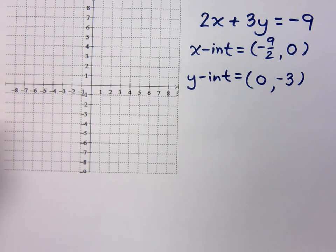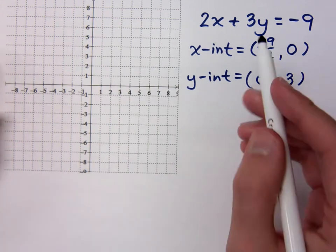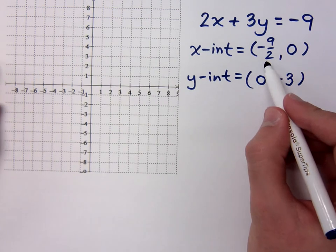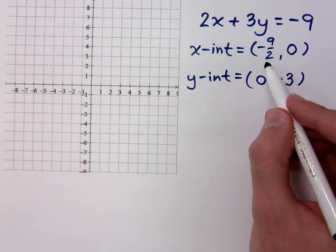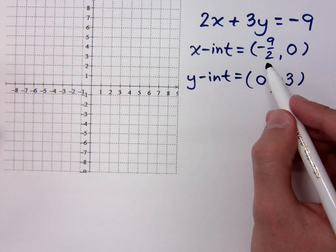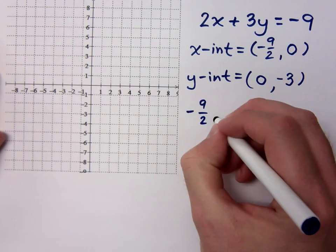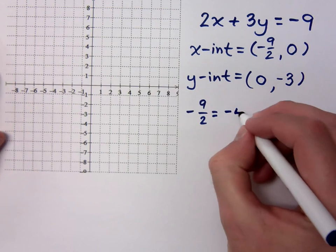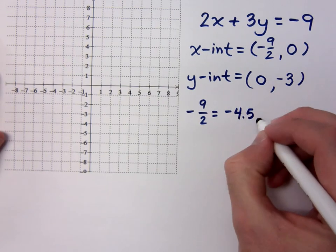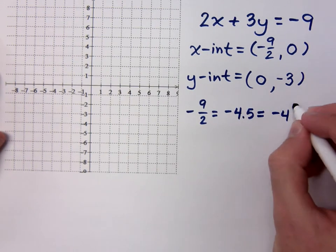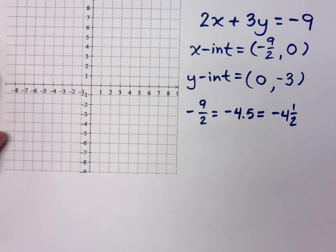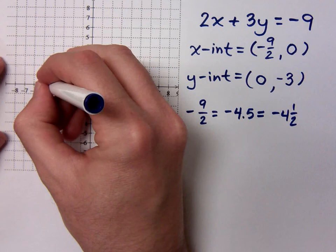Where do the x-intercepts go? On the x-axis, right? How am I going to plot negative 9 halves, 0? What's another way of saying negative 9 halves? 4.5. Right. This is a negative, saying negative 4.5. You could also say negative 4 and a half if you want to go for the mixed number. So it's negative 4.5, 0.